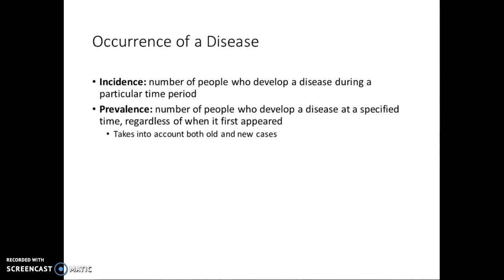Prevalence is simply the total number of cases — how many total cases are we dealing with for a given disease. Prevalence is a really good indicator for chronic diseases. Examples of chronic infectious diseases include hepatitis B, hepatitis C, and HIV, which people generally have for a very long period of time. Whereas incidence counts new cases each year, prevalence tracks how large our total population pool is growing.